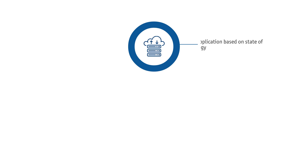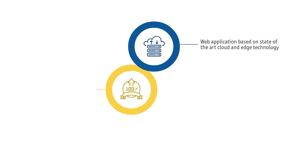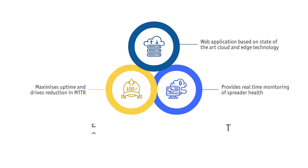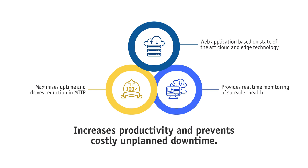Brahma Spreader Monitoring System is a state-of-the-art web application designed to maximize the spreader's uptime and reduce mean time to repair. It provides real-time monitoring of the spreader fleet health, increases the productivity, and prevents costly unplanned downtime.